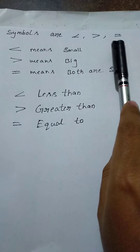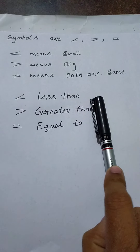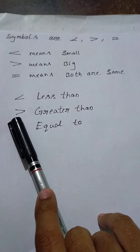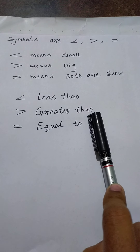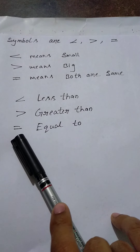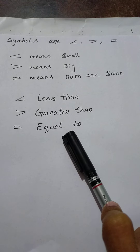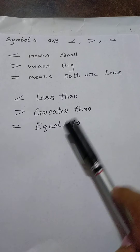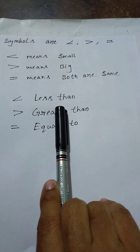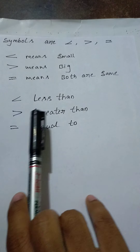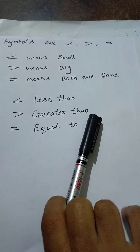The next topic is symbols. Symbols are: less than, greater than, and equal to. This symbol is called less than. This symbol is called greater than. This symbol is called equal to.